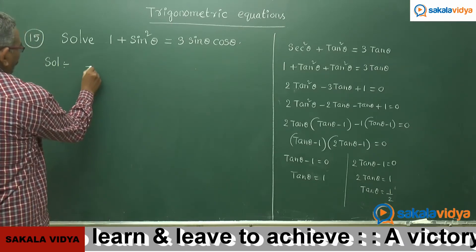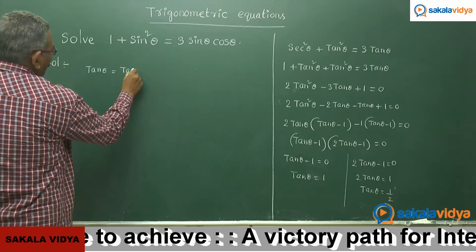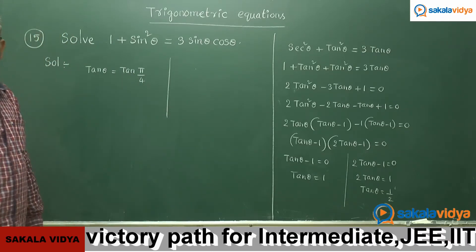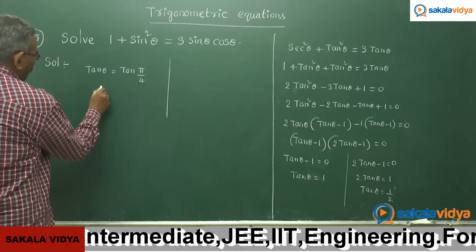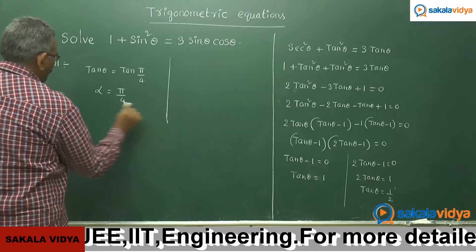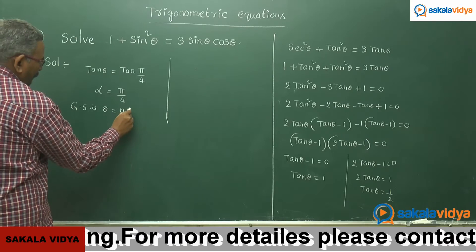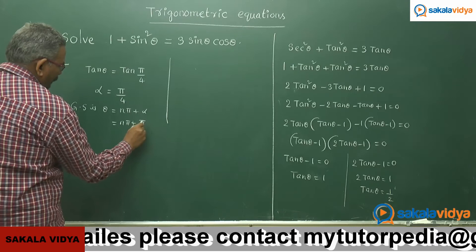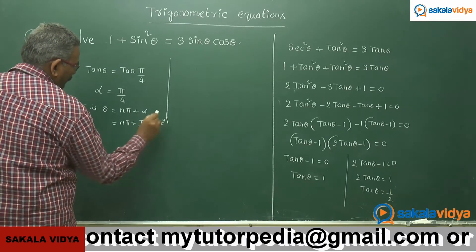For the first case, tan theta equals to 1, we can write this as tan theta equals to tan 45 degrees. The principal value alpha equals to pi by 4. Therefore, the general solution is theta equals to n pi plus alpha, that is n pi plus pi by 4, where n belongs to Z.